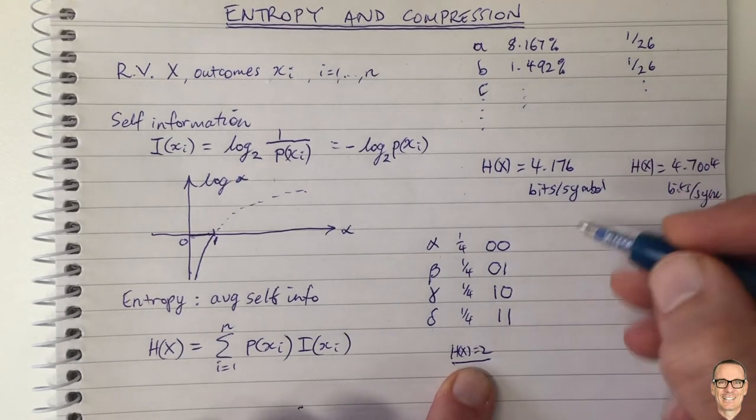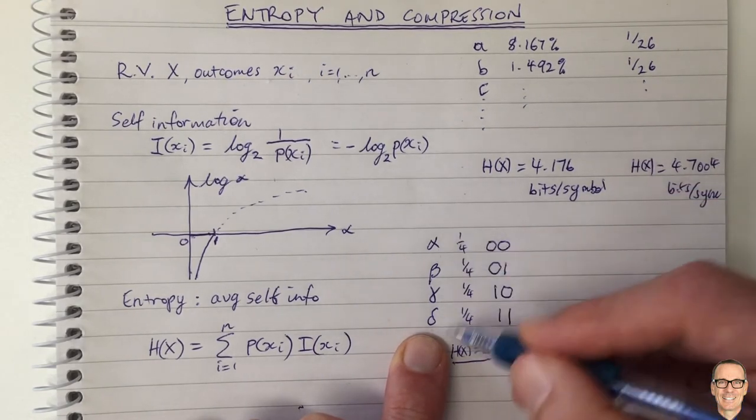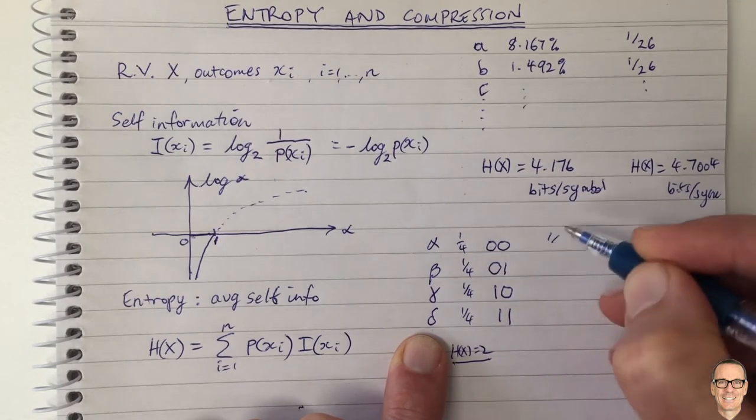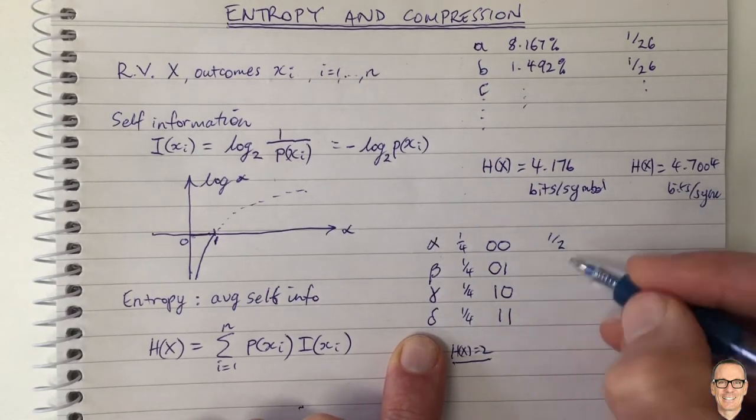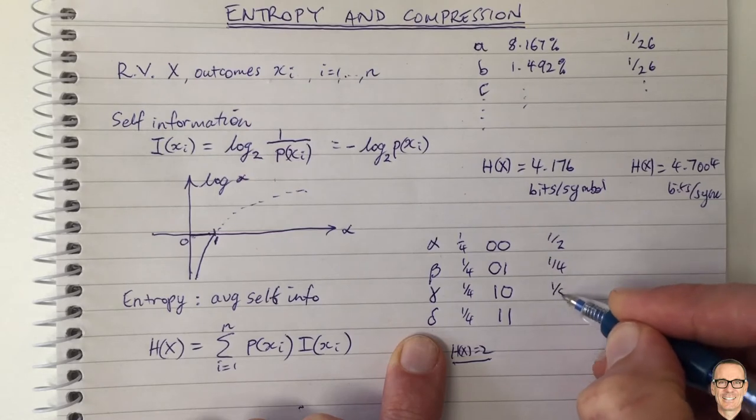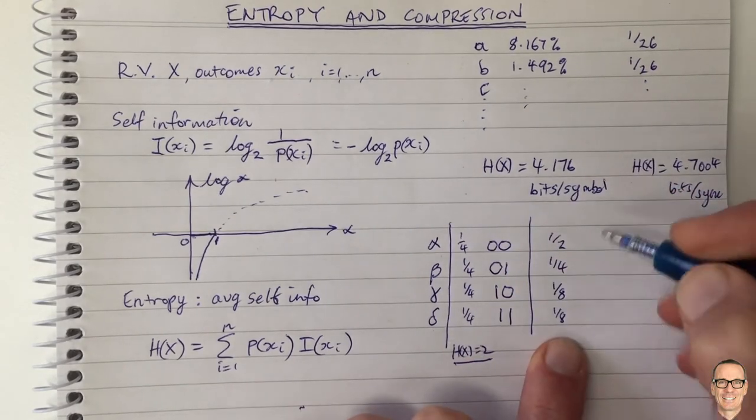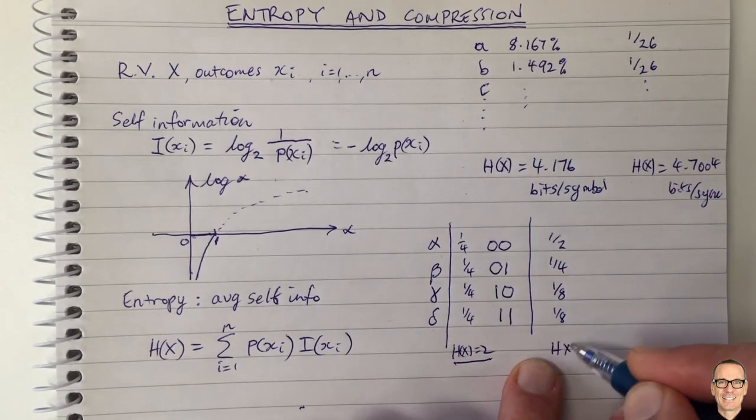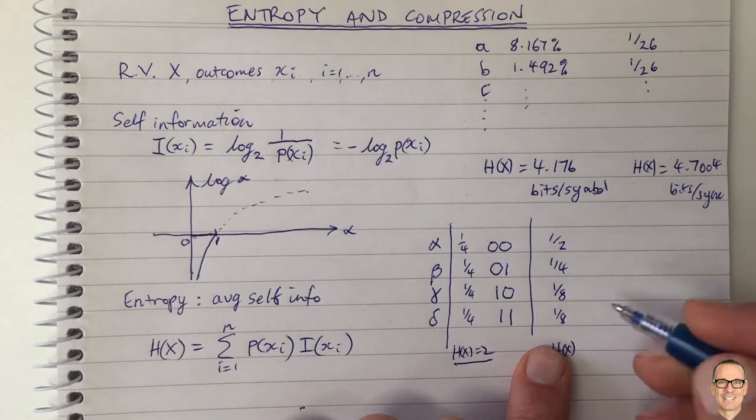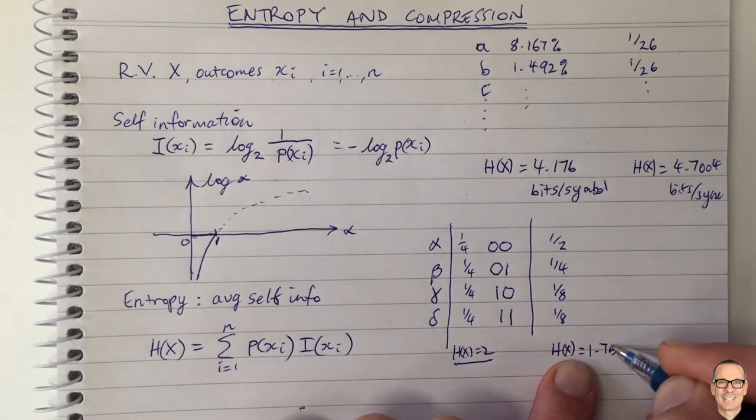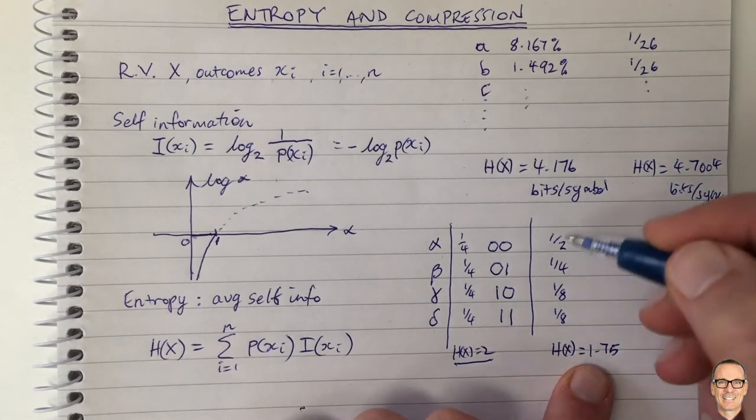So let's say there was another, let's say it wasn't that they were equally likely, let's say we use these in a language and let's say our language that we choose says that alpha is used let's say half the time in the words that we create from this small alphabet here. Let's say beta was a quarter, let's say gamma was an eighth and delta was an eighth. In this case if this was the case then we can work out what the entropy is by using this formula here with these probabilities and this would come out to equal one point seven five. And in this case I can also give you an encoder which achieves this entropy and here it is.